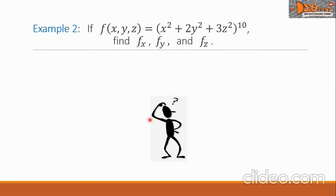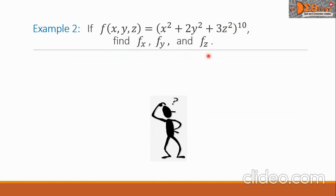Example 2. If f(x, y, z) equals x squared plus 2y squared plus 3z squared, and this trinomial is raised to the power 10, find f sub x, f sub y, and f sub z.